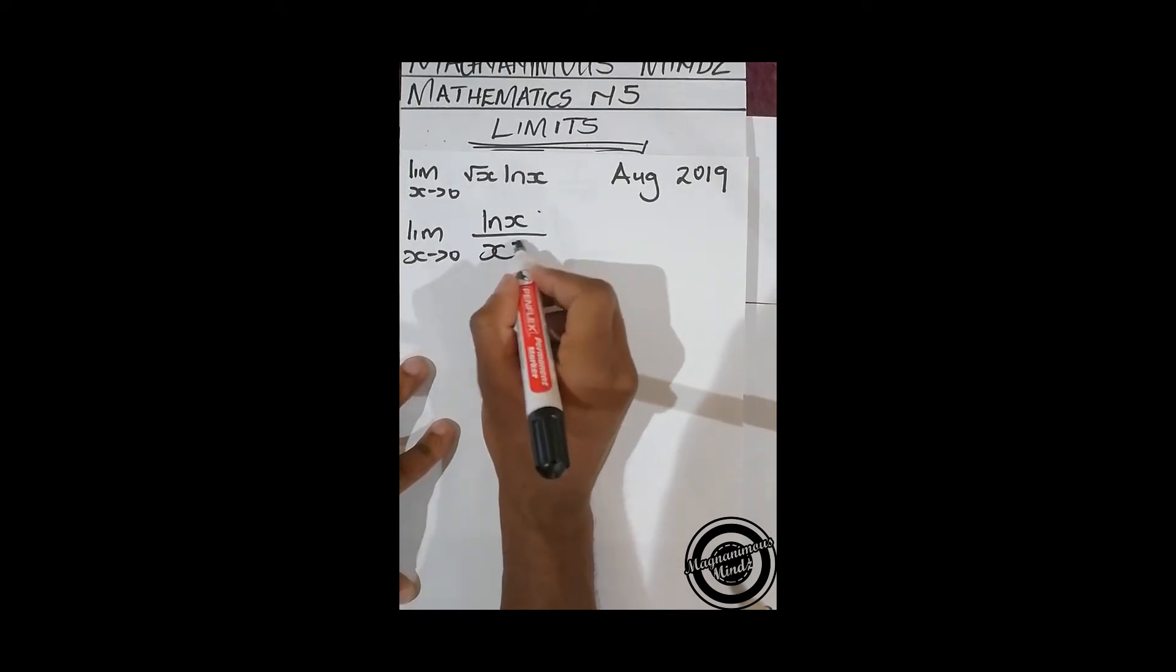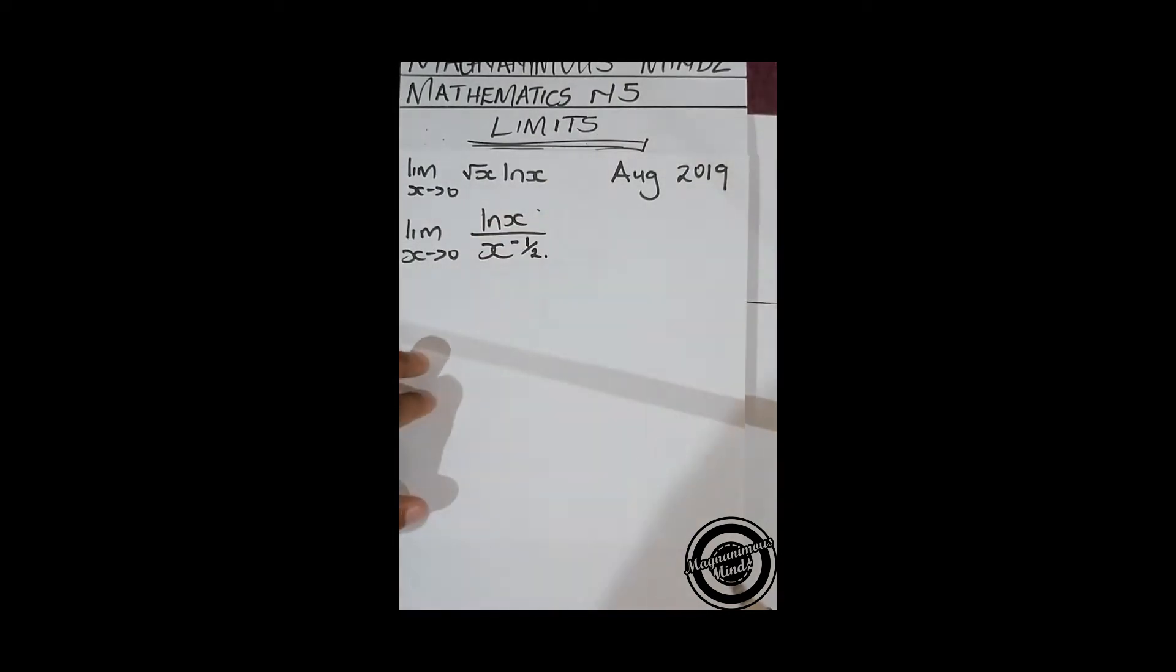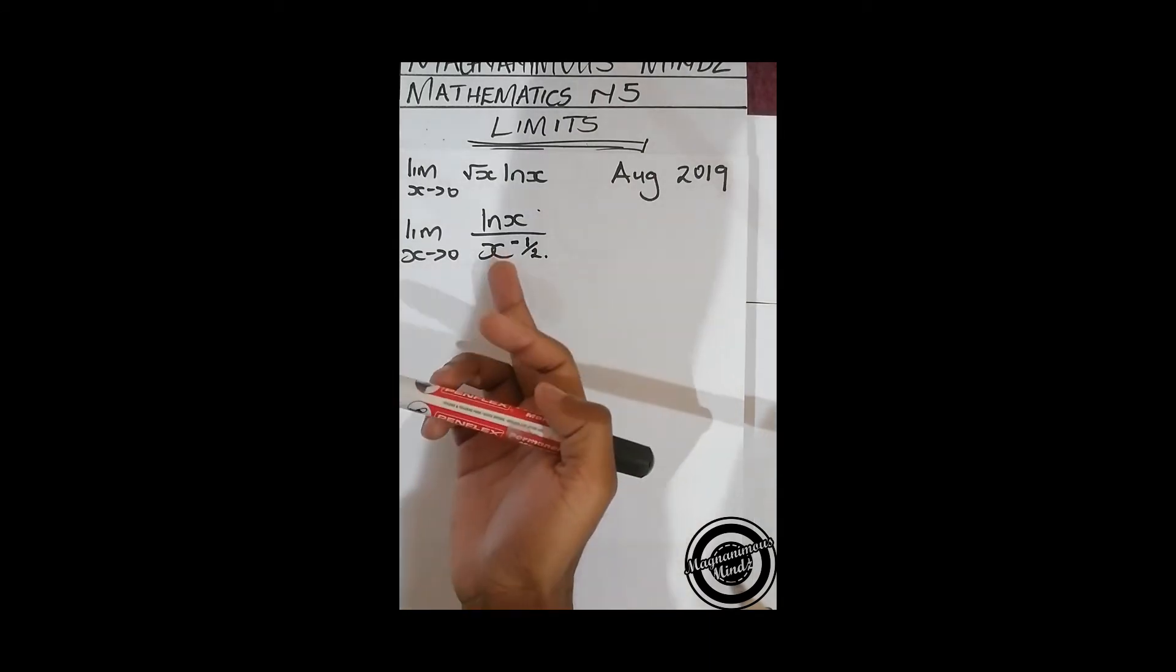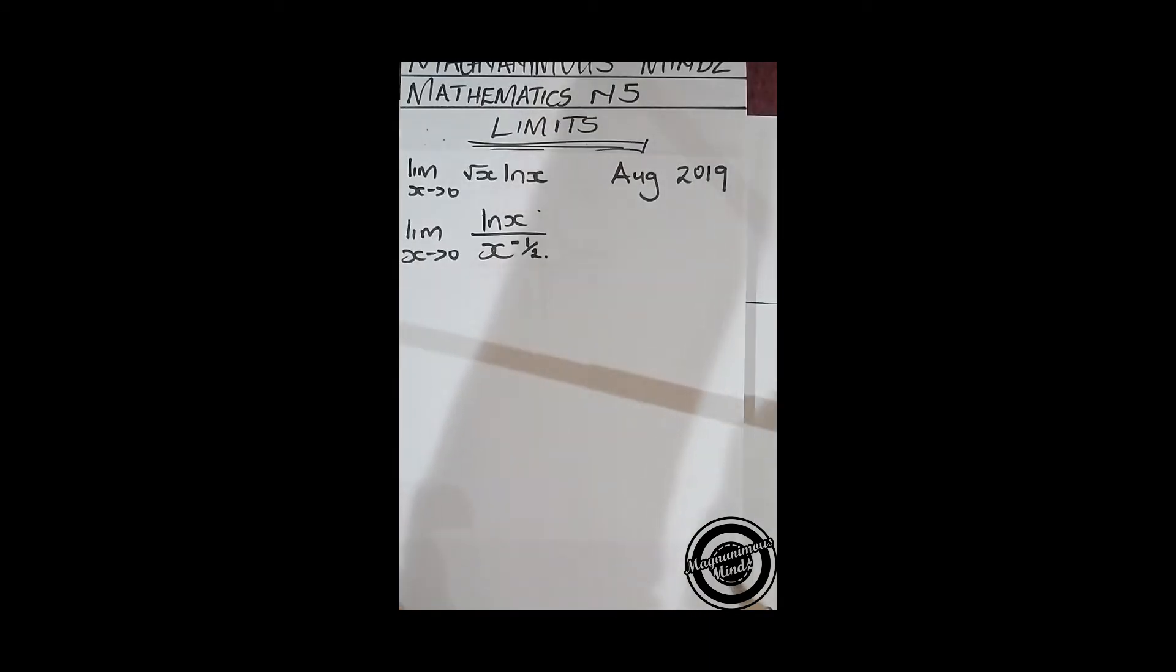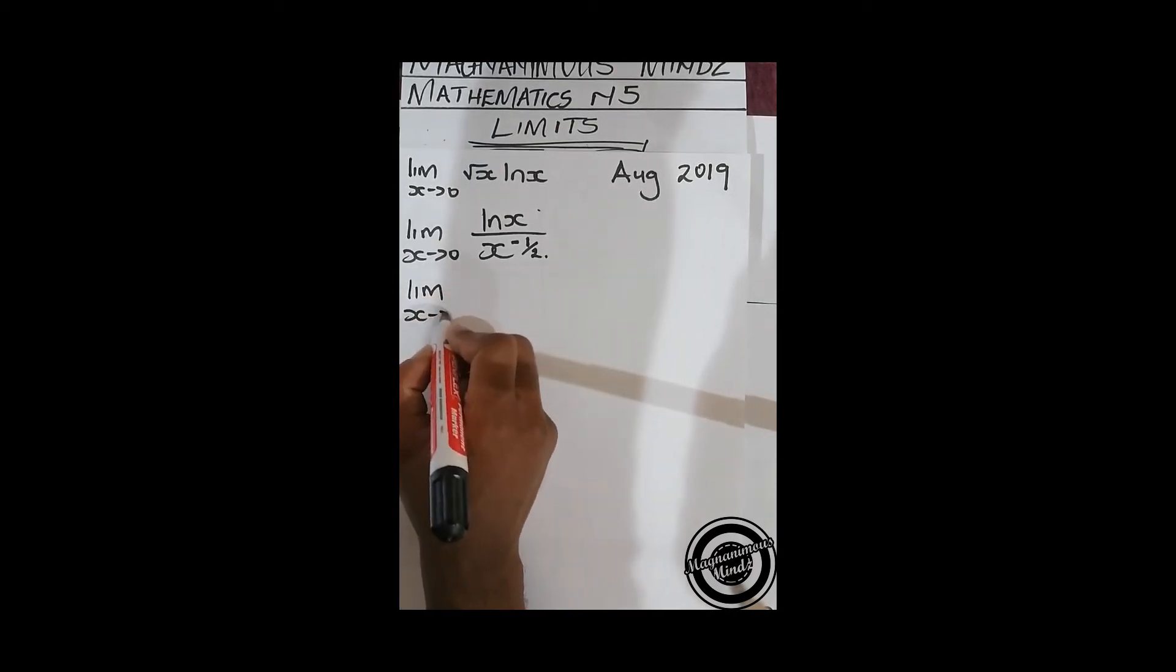If we directly substitute, you'll realize this is going to be undefined because you can't divide something by zero. In this case, we're going to apply L'Hôpital's rule, which means we are going to differentiate ln x and also x to the power negative 1/2. That will be x approaching zero.